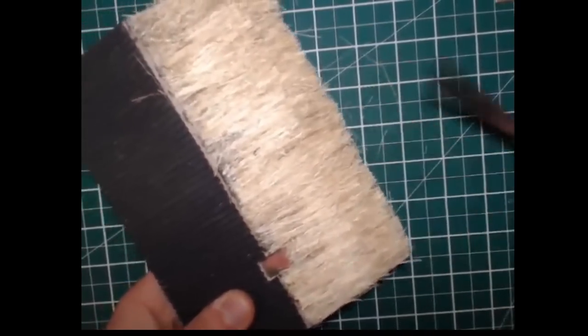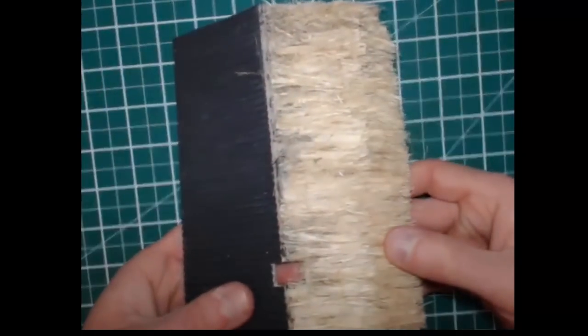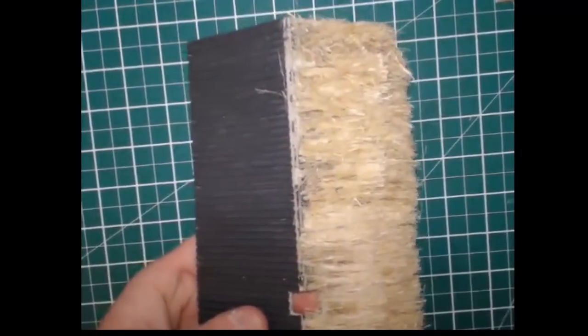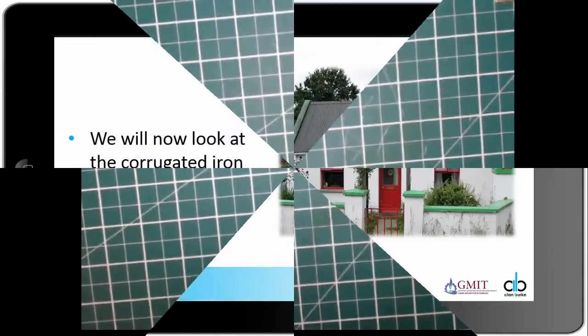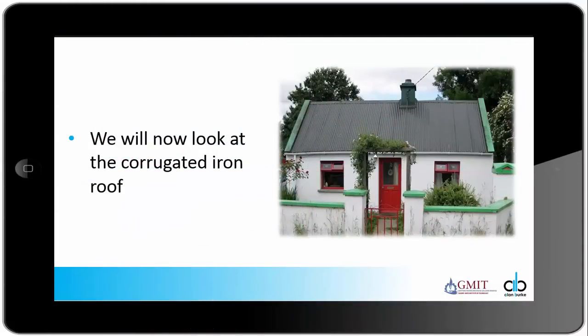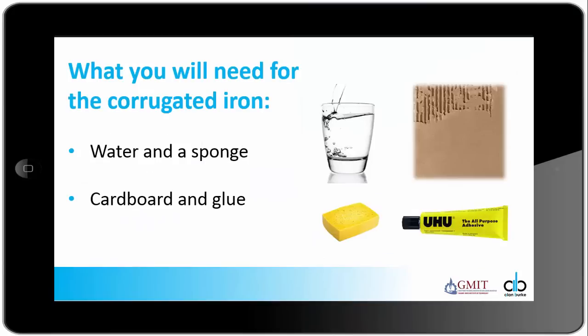We will now look at the corrugated iron roof and how to make it. What you will need for the corrugated iron roof is some water and a sponge, some old cardboard and some glue.